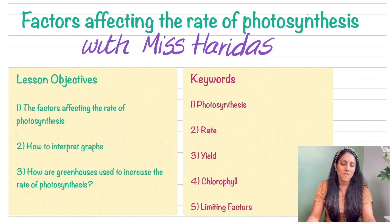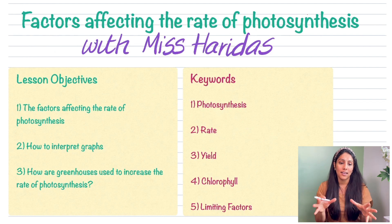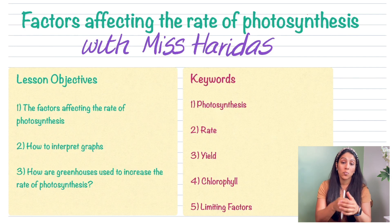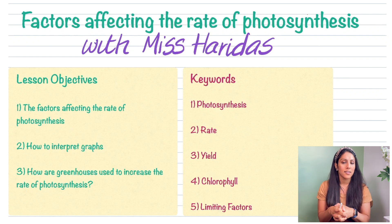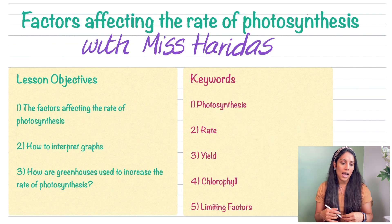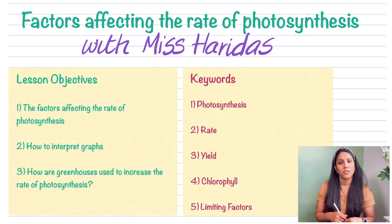This lesson is all about factors affecting the rate of photosynthesis and there are three key objectives. The first is what are the factors that affect the rate of photosynthesis. The second, which students usually find quite difficult, is how to interpret graphs. And the final one is looking at how greenhouses are used by farmers to increase the rate of photosynthesis.